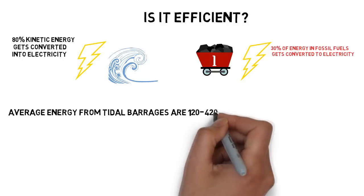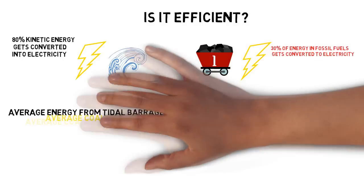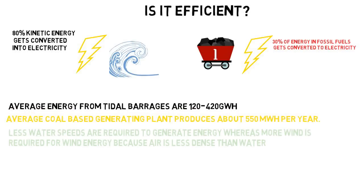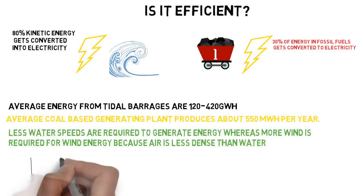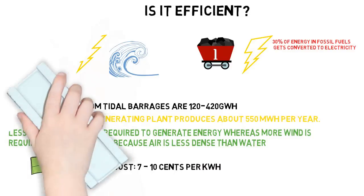The average energy produced by tidal barrages are between 120 to 400 GW per hour. A coal-based generating plant produces about 550 MW per hour per year. Costs to generate are usually 7 to 10 cents per kilowatt hour. Tidal turbines function best at flow rates of 7 to 12 kilometers per hour.